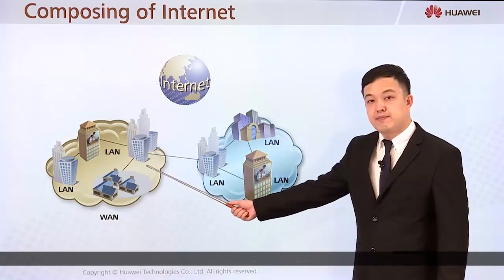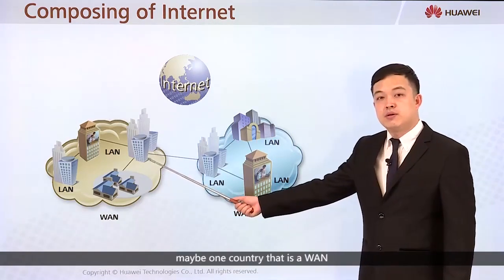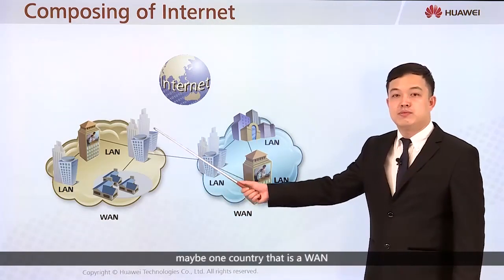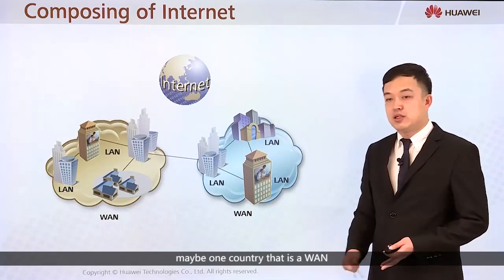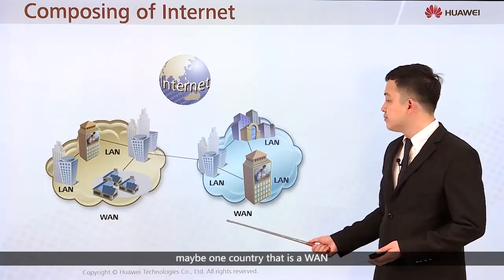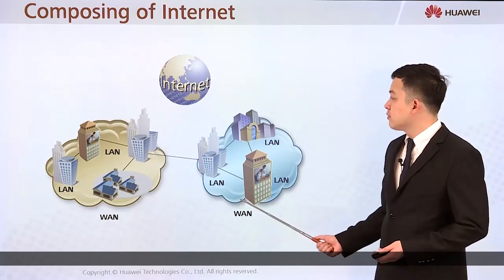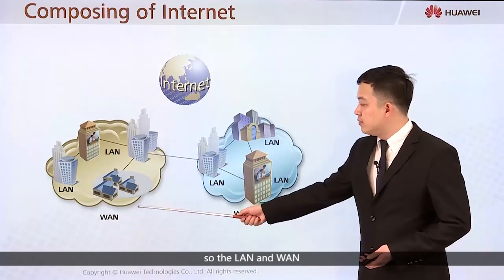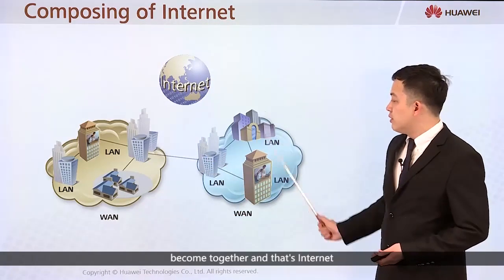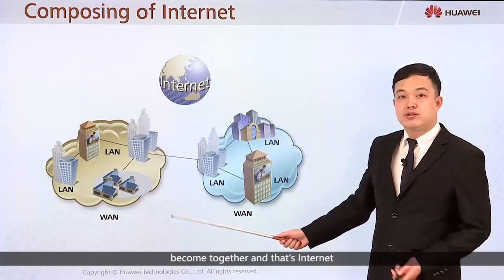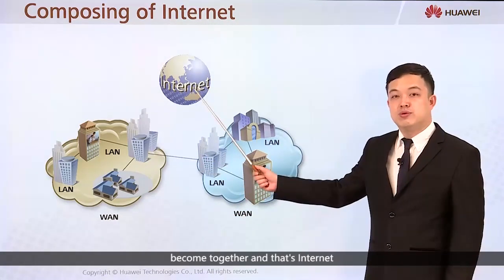The WAN network can span across different cities, or even one country. That is a WAN. So the LAN and WAN come together and they become the internet.